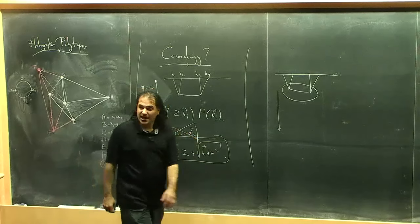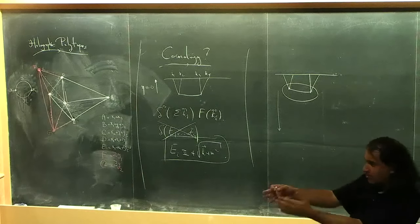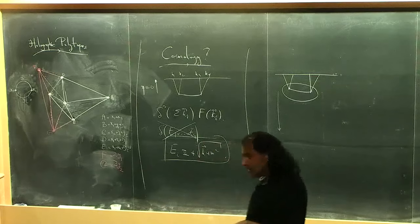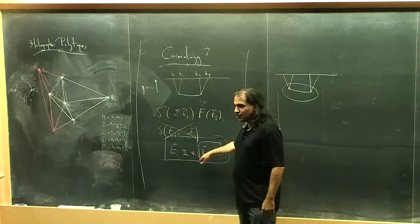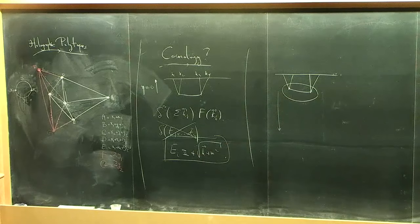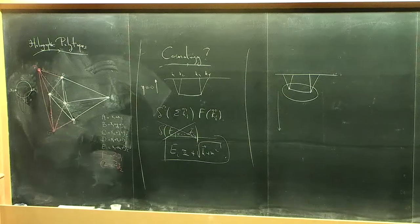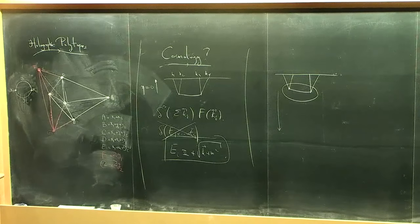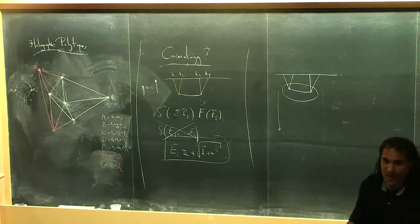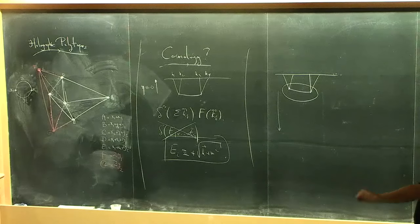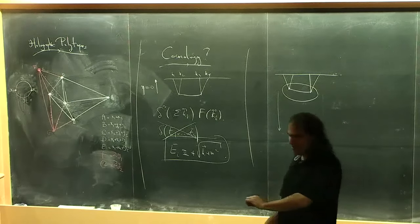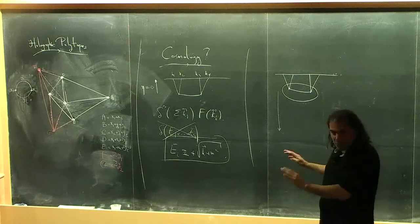This analytic continuation turns the in-in correlators to in-out. The physical reason is simple: all these propagators going out have some e^{iEη} in them. The only thing cutting off the η-bar integral is the sum of all the energies. If that sum is not zero, the integral gets cut off; but if you continue to where the sum is zero, you're not cutting it off, and the divergence comes when all these guys go to minus infinity together. In that limit, you can't tell the boundary is there, and the computation is exactly the same as a scattering amplitude.